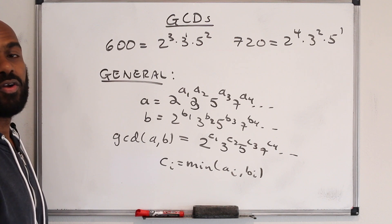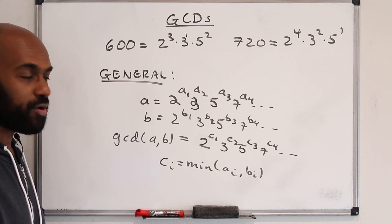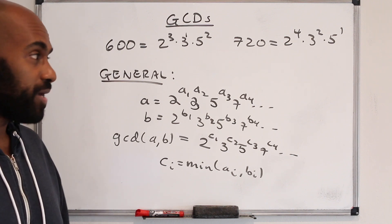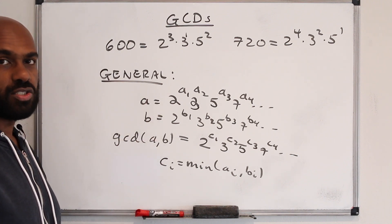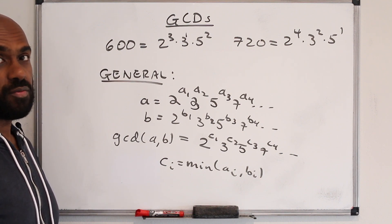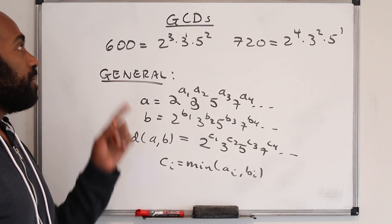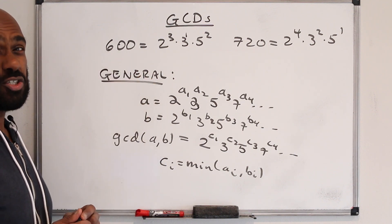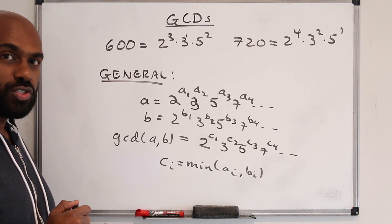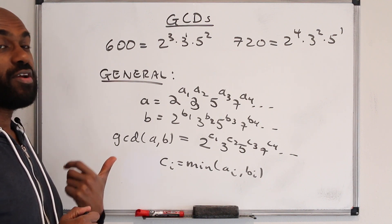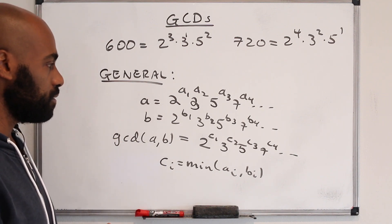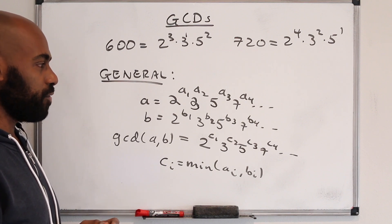In general, gcd(a, b) can be read from prime factorizations: each exponent c_i = min(a_i, b_i). However, prime factorization is computationally expensive as an algorithm. The Euclidean algorithm, which runs in logarithmic time, is much better in practice, though prime factorization helps in theory.